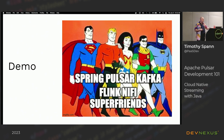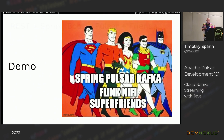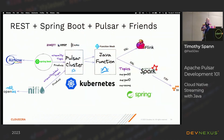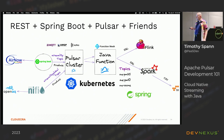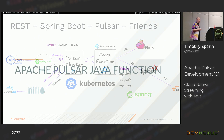I keep adding more people to my super friends — more people working together. These are the current super friends I have for building apps, and I'll show you a couple different examples of the puzzle pieces. I'll give you my thoughts on when you should use Spring, when NiFi, when Pulsar, when Flink.